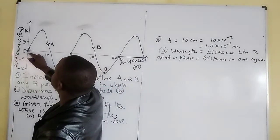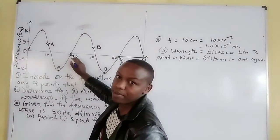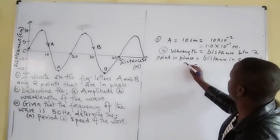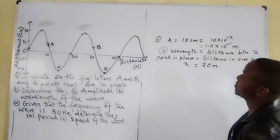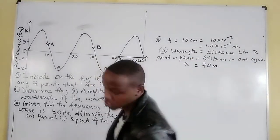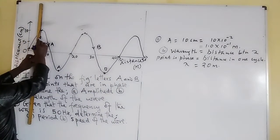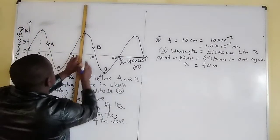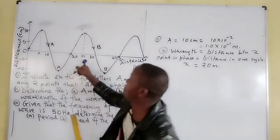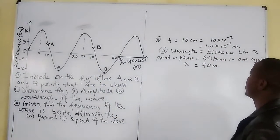From 0, the wave flows until it reaches 20 m, where the particle is at the same position going in the same direction. Therefore the wavelength λ = 20 m. We can verify this: one crest is at 5 m and the next crest is at 25 m, giving a distance of 20 m. So the wavelength of this wave is 20 meters.